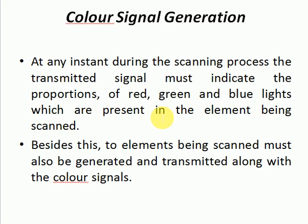At any instant during the scanning process, the transmitted signal must indicate the proportion of red, green, and blue lights present in the element being scanned. Besides this, the luminance of the element being scanned must also be generated and transmitted along with the color signals. The camera output voltages are labeled as VR, VG, and VB, but generally the prefix V is omitted and only the symbols R, G, and B are used to represent these voltages.